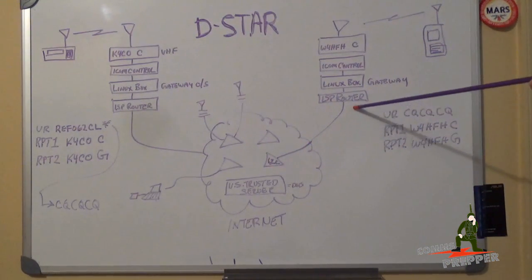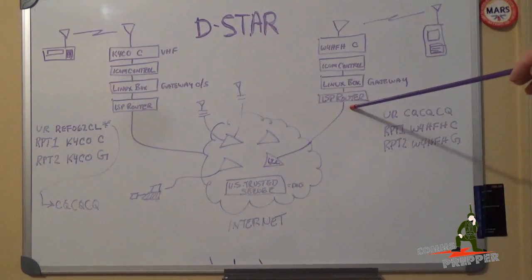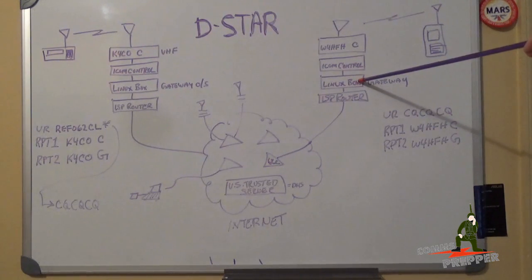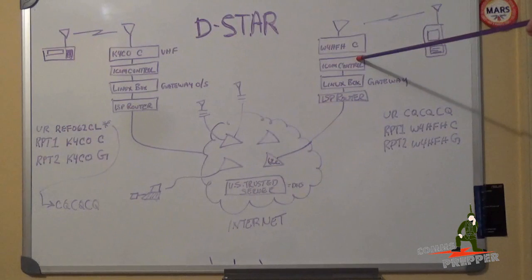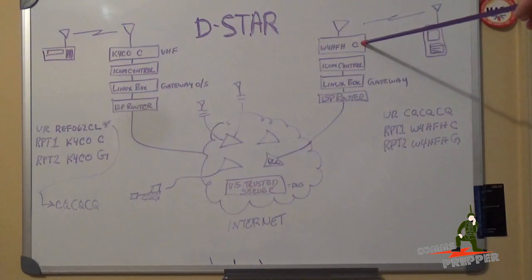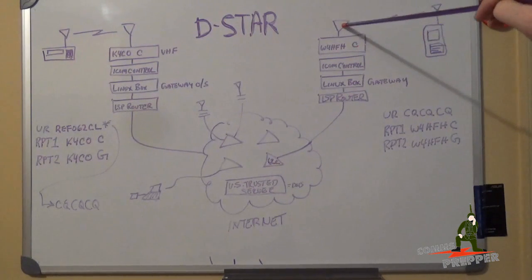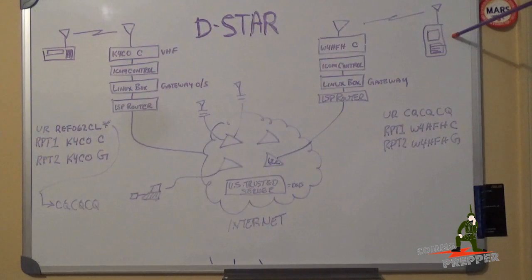His signal came up through the ISP router here in Alexandria, Virginia, to the gateway box here, to the ICOM repeater controller, to the RF piece, in this case the VHF repeater, to the antenna, out to my radio.